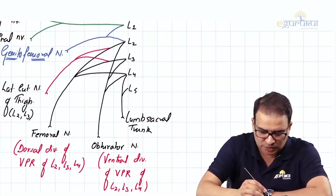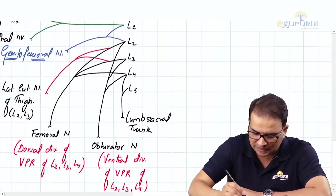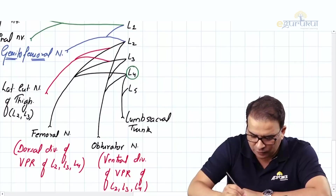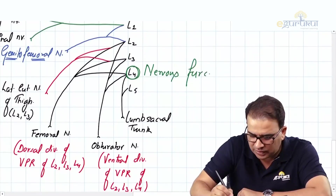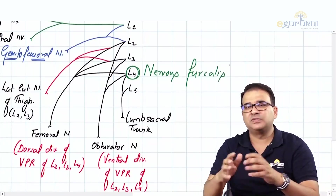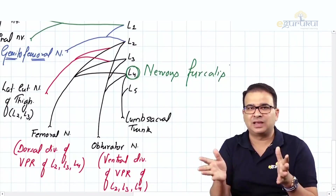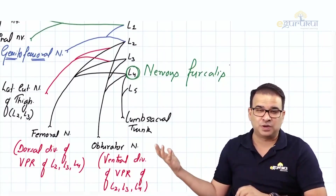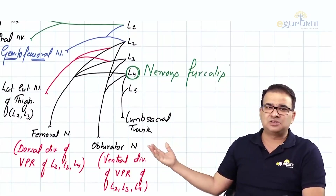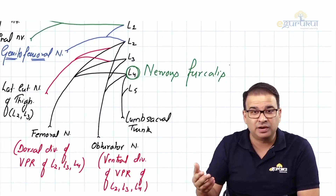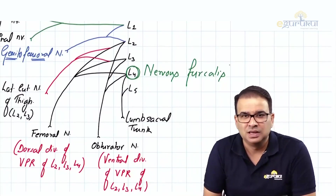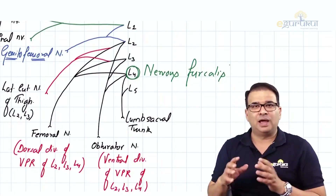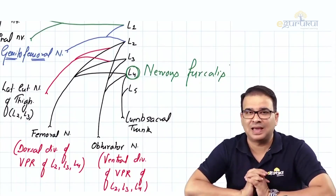An important exam question: the L4 root is also called the nervus focalis. It is contributing to so many nerves — the lumbosacral trunk, the accessory obturator nerve, the obturator nerve, and the femoral nerve. That is why L4 nerve is given the name nervus focalis.